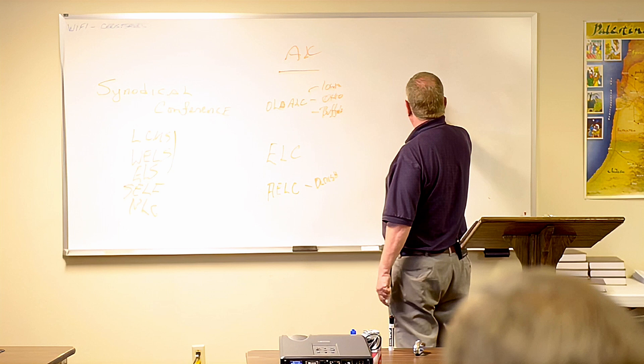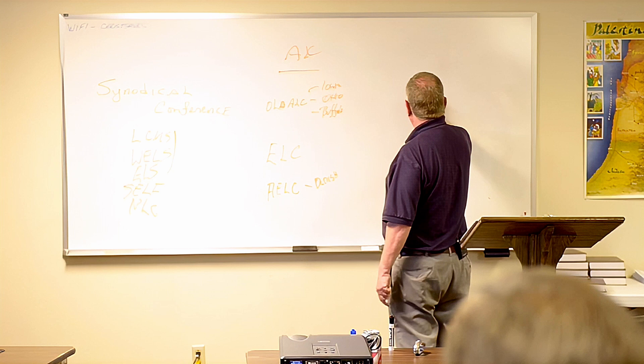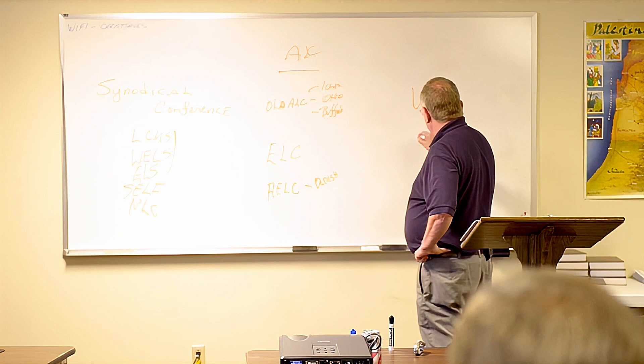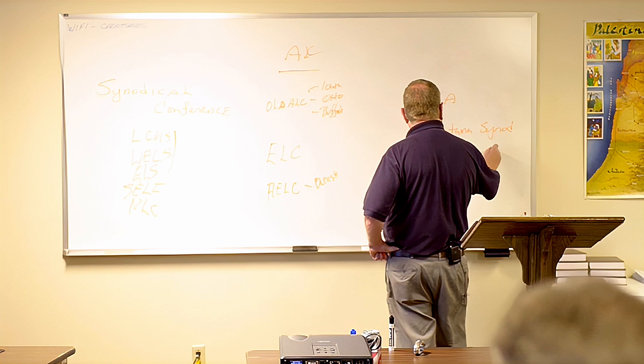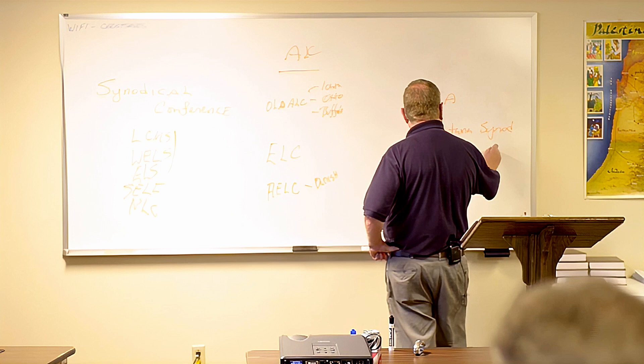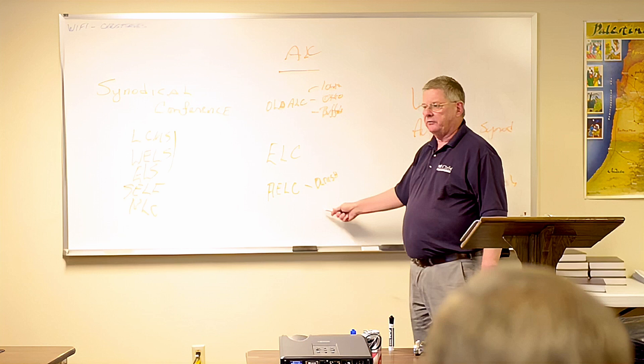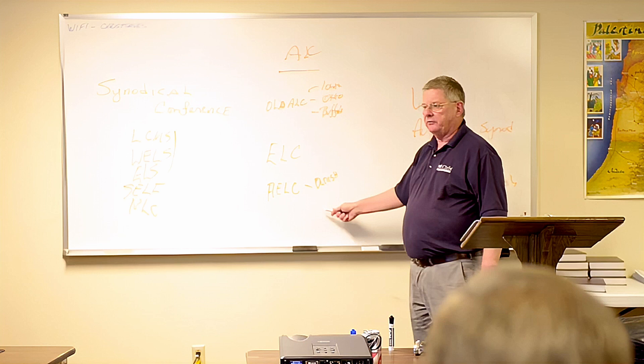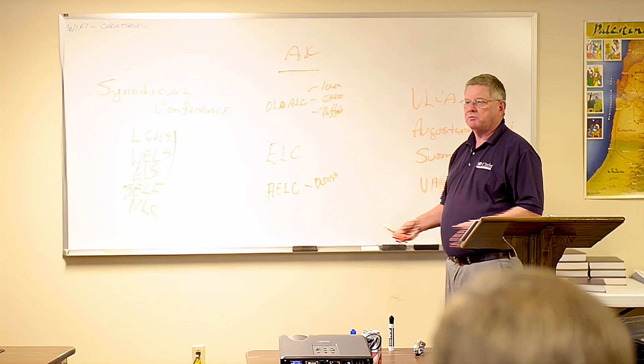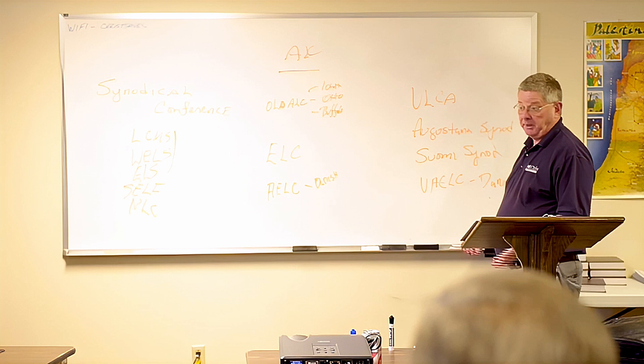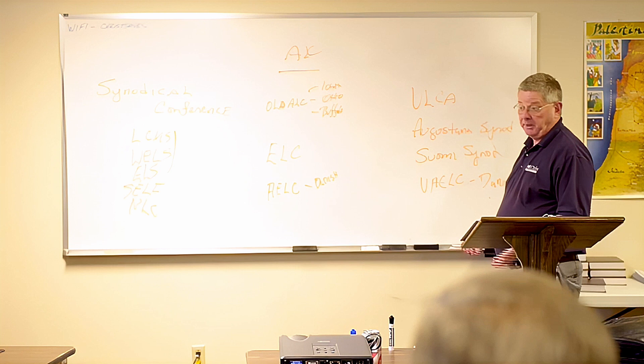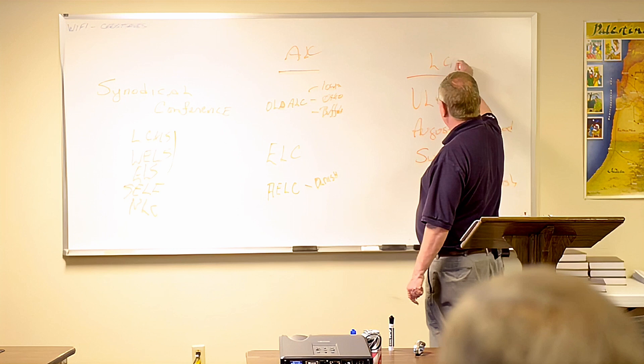And then over here, you have the United Lutheran Church in America, the Augustana Synod, the Suomi Synod, the Finns, and the United American Evangelical Lutheran Church, also a Danish group. These were the so-called Happy Danes, and these were the Sad Danes. The Sad Danes were much more pietistic. The Happy Danes were the Grundtvigian Danes who were theologically more liberal, but not as pietistic. These bodies in 1962 would unite into the LCA.